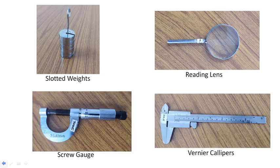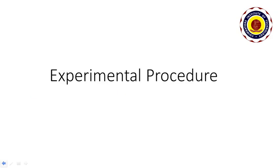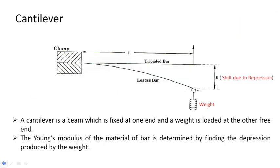Let us now see the experimental procedure. First, we will understand what is meant by a cantilever. A cantilever is a beam which is fixed at one end and a weight is loaded at the other free end. The Young's modulus of the material of the bar is determined by finding the depression produced by the weight.